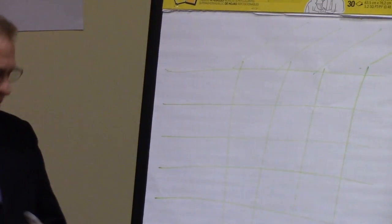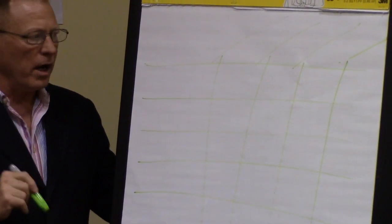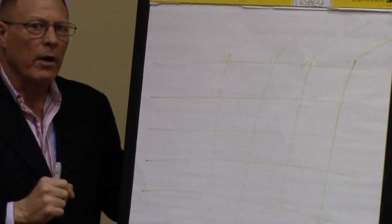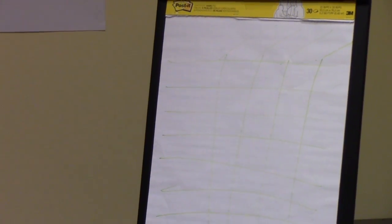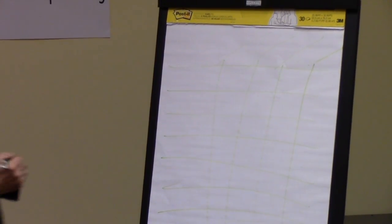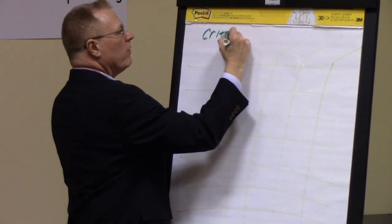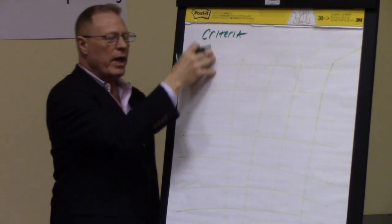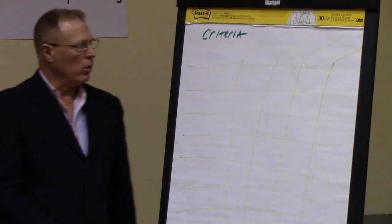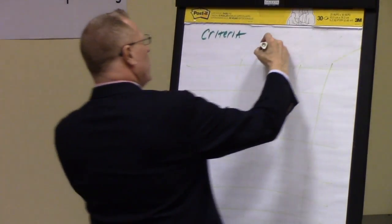Dr. Tufte, in fact, encourages this light background of grid lines, suggesting this is not primary information — it should recede in the background so that your primary information can pop out at you. We would normally take whatever we have the fewest of and array it across our x-axis. What we have the most of, we would array along the y-axis.